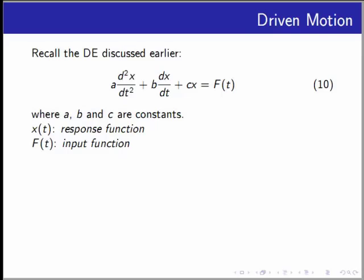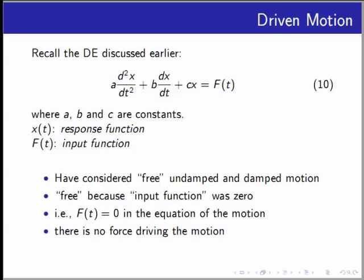Now, consider the second order linear differential equations with constant coefficients. Here, a, b, and c are constants. We have discussed this earlier. We know how to find x, the unknown, which is the response function, with a given input function F. We have considered how this was used in modeling free vibrations, both with and without damping. Free because the input function was zero. That is, there is no force driving the motion of the mass. And the mass involved is free to move or oscillate without any external force.